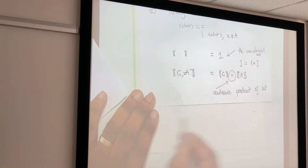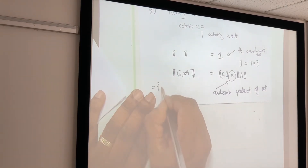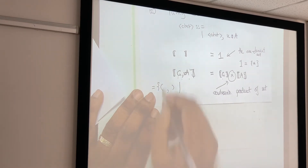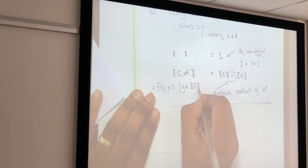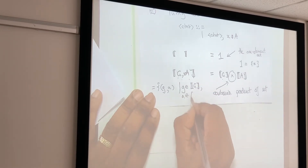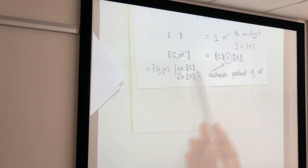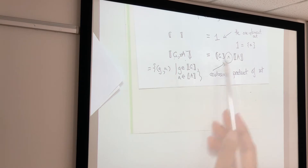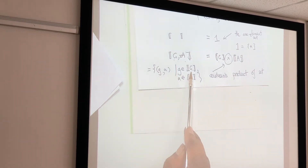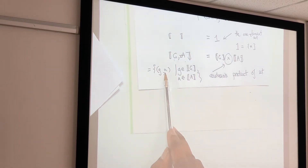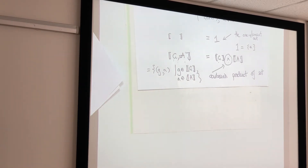The Cartesian product of two sets is the set of pairs of elements, where the first element comes from the first set and the second element comes from the second set. That's what this × means — it's pairs. The first thing comes from [G] and the second thing comes from [A].